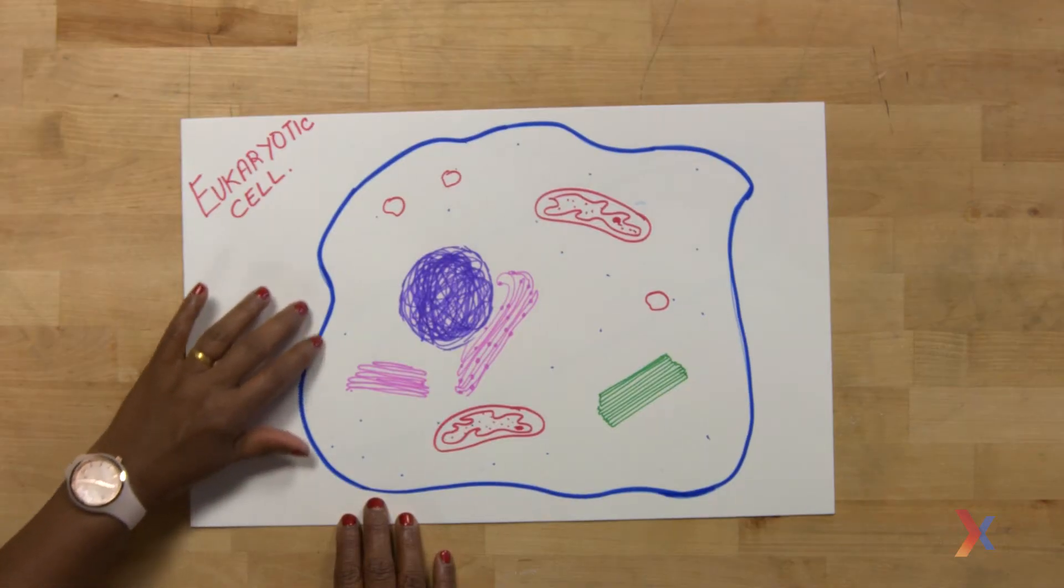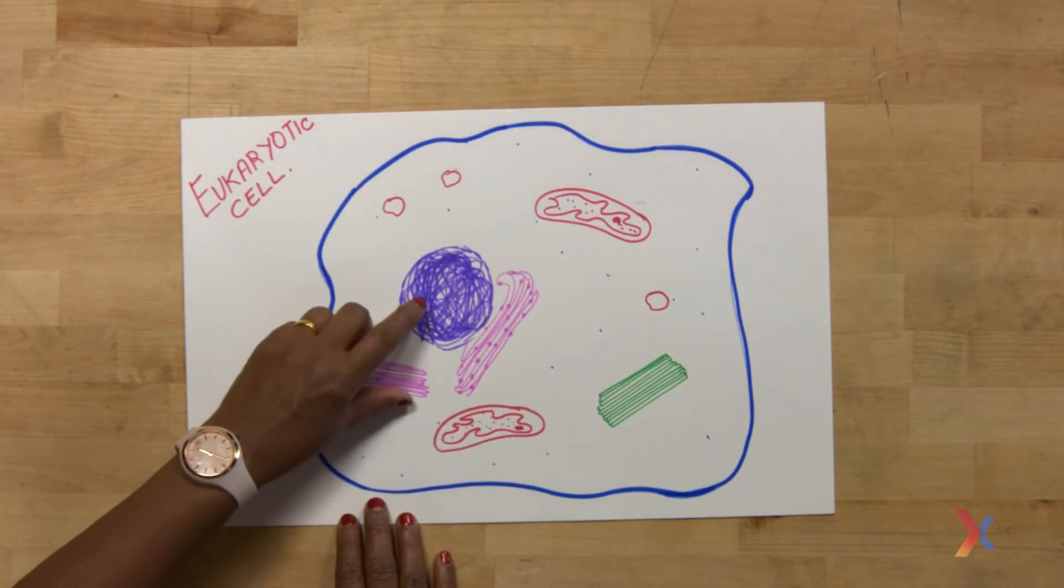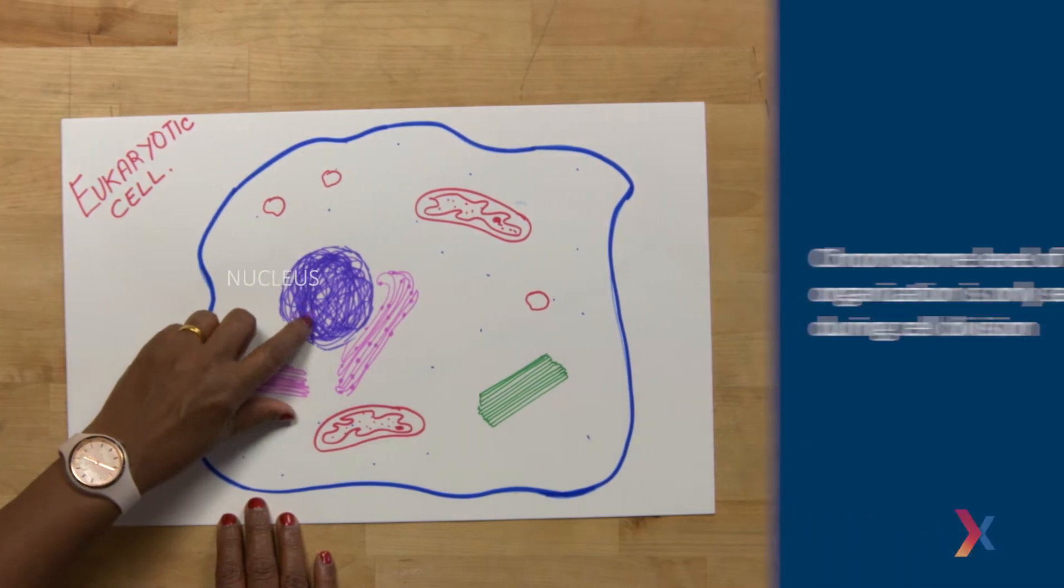Now the question is, where does this DNA appear in different cell types? Let's take a look at a eukaryotic cell. In a eukaryotic cell, as you can see over here, you have an organelle which is named as the nucleus.